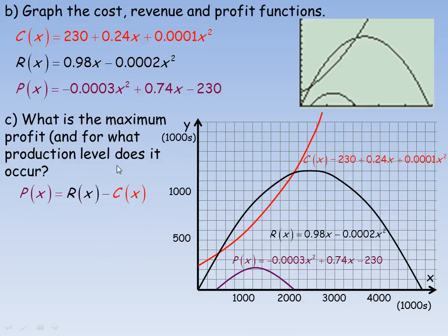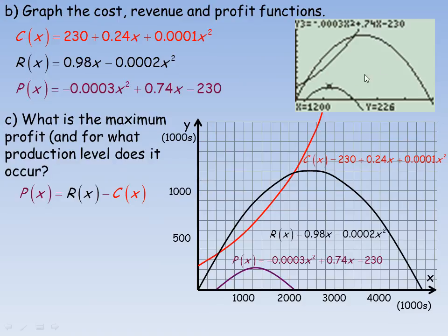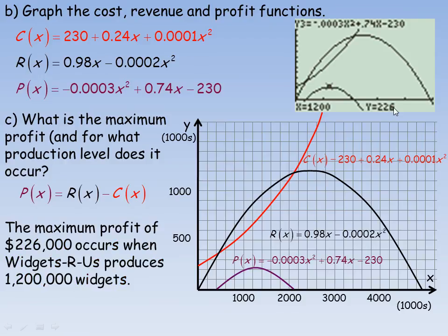Using a graphing calculator, the maximum profit occurs at x equals 1,200 with y equals 226. So the maximum profit of 226,000 dollars occurs when producing 1.2 million widgets. Alternatively, you could find the two zeros of the profit function and use their midpoint as the x-coordinate of the vertex. That is the end of the lesson.